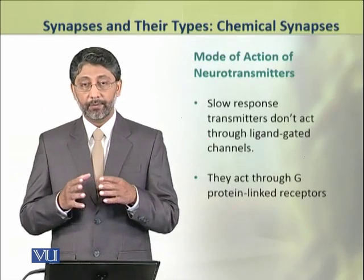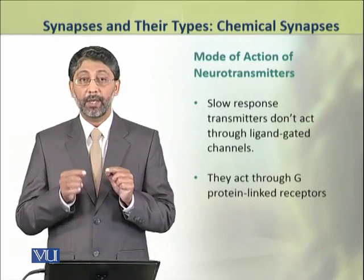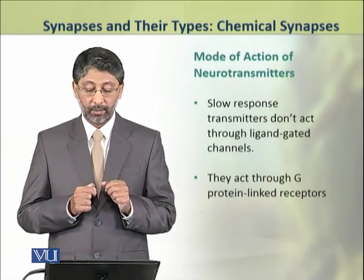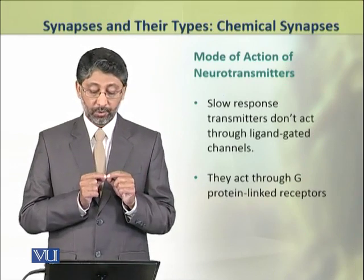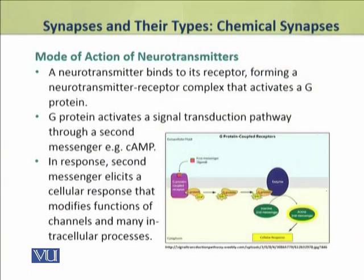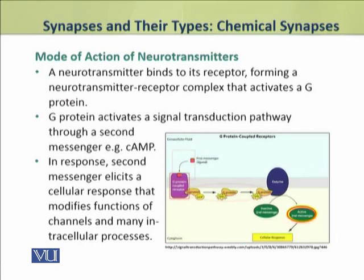The slow response neurotransmitters do not act through ligand-gated channels but instead act through G-protein linked receptors. A neurotransmitter binds to its receptor, forming a neurotransmitter-receptor complex that activates a G-protein. The G-protein in response activates a signal transduction pathway that involves a second messenger — for example, cyclic AMP (cAMP). The second messenger then elicits a cellular response that modifies the functions of channels and many intracellular processes.